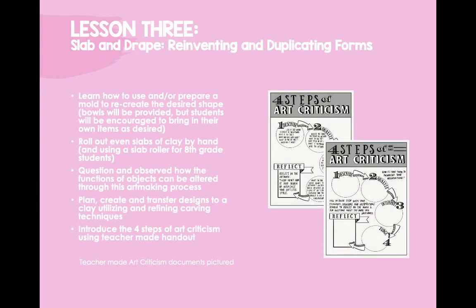Lesson 3: Slab and Drape — Reinventing and Duplicating Forms. This lesson challenges students to think about how the function of objects can be altered through the medium of clay. Students will learn how to use and prepare an object as a mold, how to roll out slabs of clay manually without a slab roller, and how to strategically plan, create, and transfer designs to clay. This lesson will also introduce students to art criticism by including a peer critique as a formative assessment on day two of the project making, where students will be rotated to a different table to leave constructive feedback on someone else's work that can be used before the object is completed.